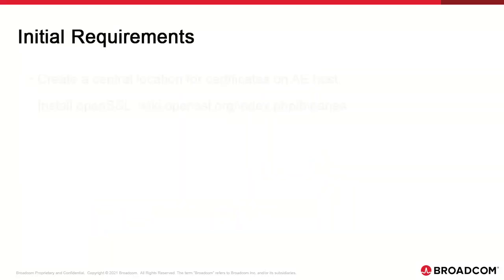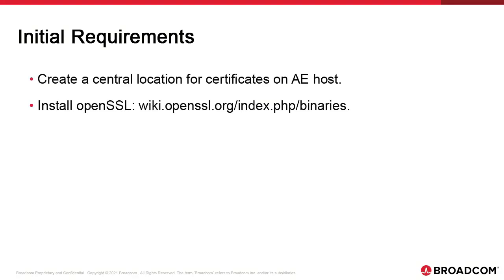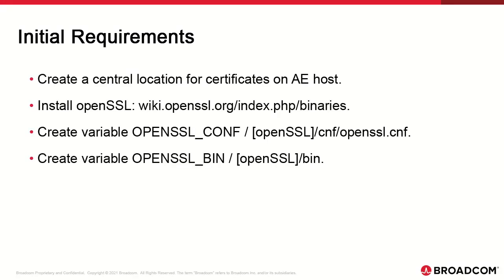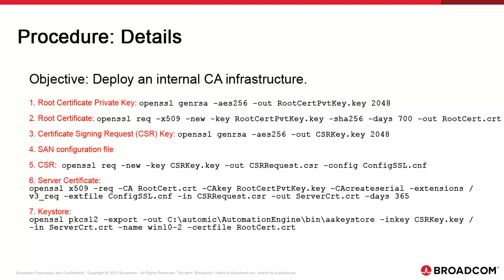You should install OpenSSL and create two environment variables for OpenSSL.cnf and the OpenSSL bin directory. These are the SSL commands to execute the procedure. First, we generate the root certificate private key with the recommended settings. Then, we create the root certificate and the private key for the CSR.